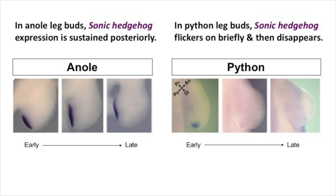If we compare what happens in python embryos at the same stages, there's this early weak domain of sonic hedgehog expression, but then 24 hours after the egg is laid, it becomes undetectable. So there's this pulse of activity, it's fairly weak, and it doesn't stay on.